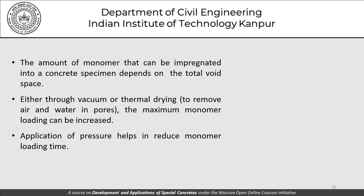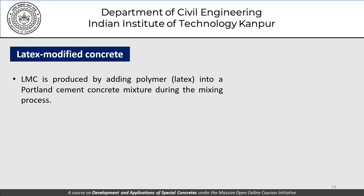Moving to the last discussion for today: latex modified concrete (LMC). LMC is produced by adding polymer — most commonly latex — into a Portland cement concrete mixture during the mixing process. In this case the latex or polymer is added during mixing itself. It does not directly participate in or affect the hydration reaction, because cement and water are present and hydration continues anyway — both cement hydration and polymer film formation processes occur together.